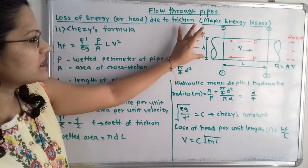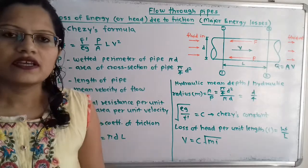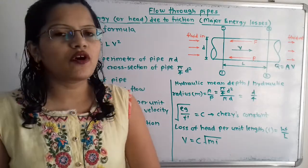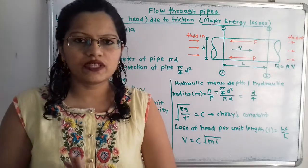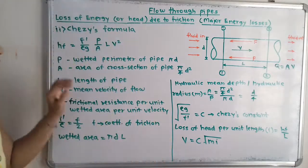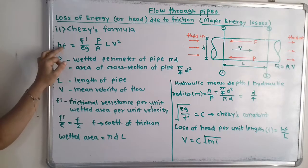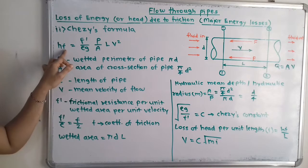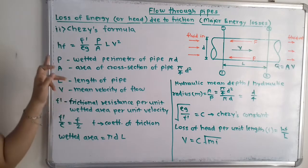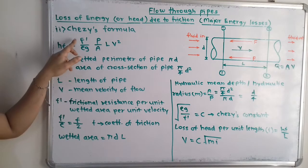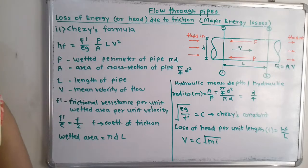Here, small d is the diameter of the pipe. Now we will move to Chezy's formula. The loss of head due to friction is denoted as H_F — where H is the head notation and small f at the base denotes friction.